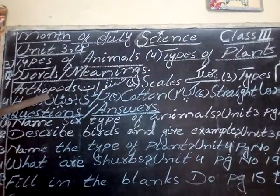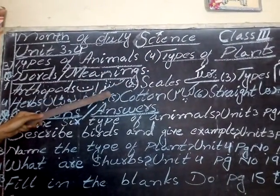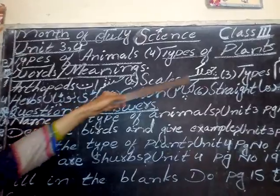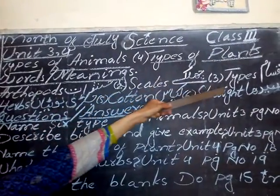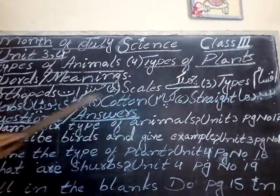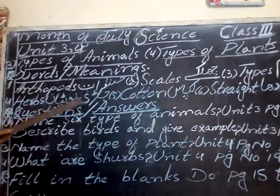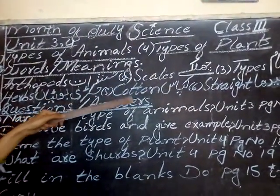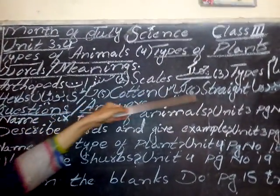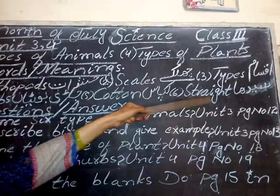What is the meaning? Arthropods, herbs, shrubs, and related types for the exam. Hearths, jasmine, cotton, grasses, straits, cedar.